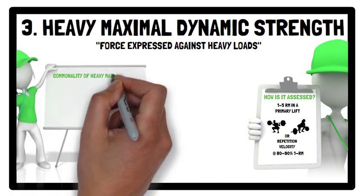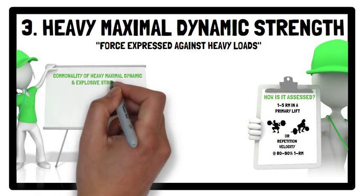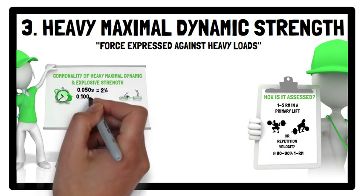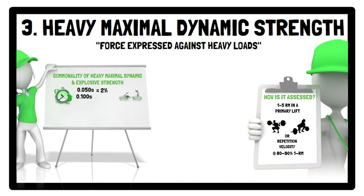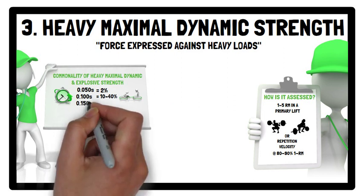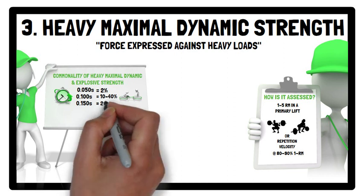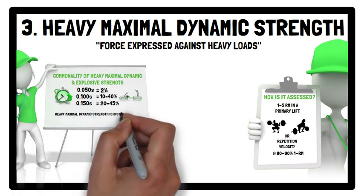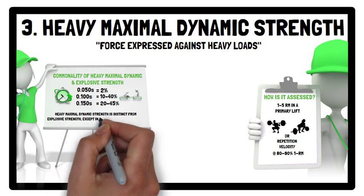A very low commonality exists between heavy maximal dynamic strength and explosive strength, particularly at early time points. For example, at 0.050 seconds there is a 2% commonality; at 0.100 seconds there is a commonality ranging between 10–40%; and at 0.150 seconds there is a commonality ranging between 20–45%. The higher ranges are found in competitive weightlifters. Therefore, heavy maximal dynamic strength is distinct from explosive strength, except in competitive weightlifters.